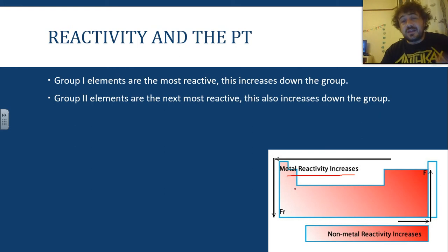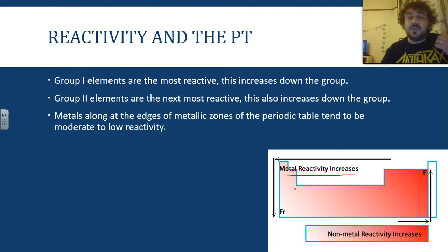Group 2 elements, they're the next most reactive, and they also increase as you go down the group. Now, you know that they're less reactive because, unlike sodium, magnesium doesn't explode when we put it in water. Metals along the edges of the metallic zones, so that's essentially along this top row here, and around where it joins up, where it interacts, where you start to get non-metals. They go from moderate to low reactivity.